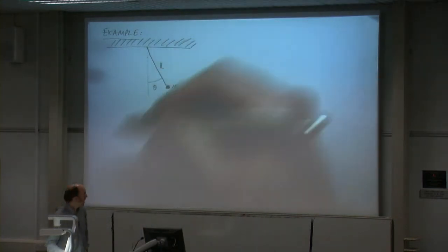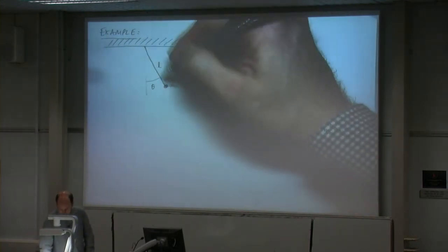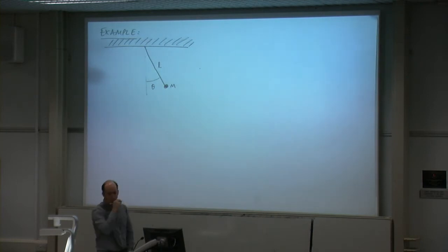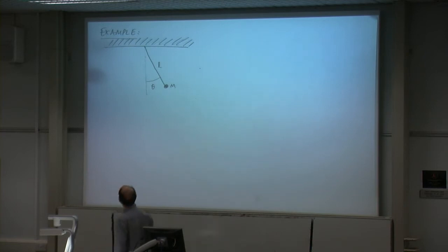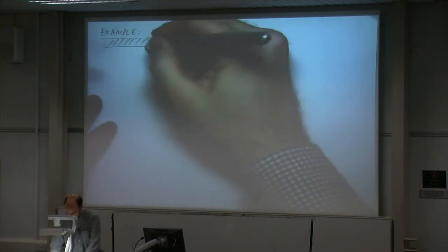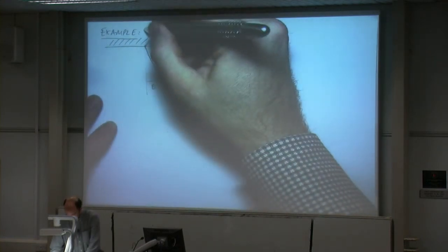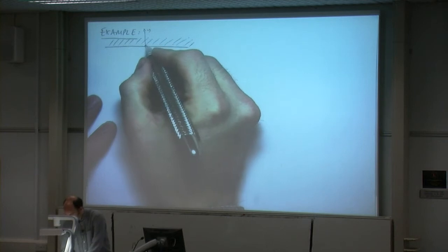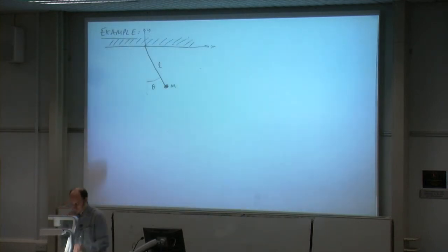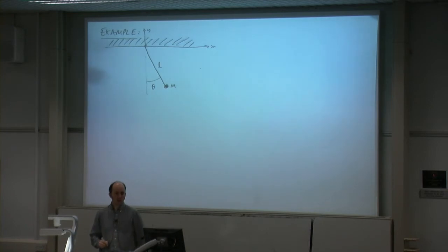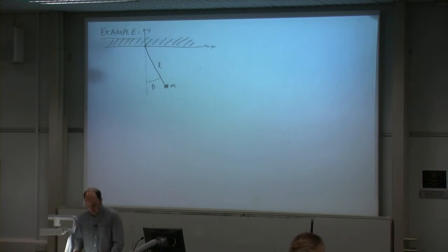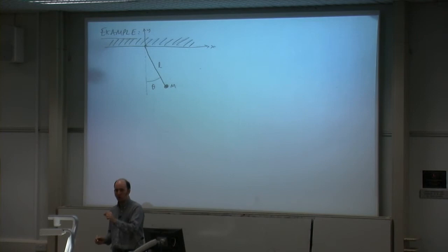We've got a pendulum here, length L, with a bob of mass M, and it oscillates backwards and forwards with an angle of theta. I'm going to set a datum to be this point here. So this is my y direction, and this is my x direction — y is upwards, x is horizontal. The method I'm going to use is to find the position of the bob in the x, y coordinates.